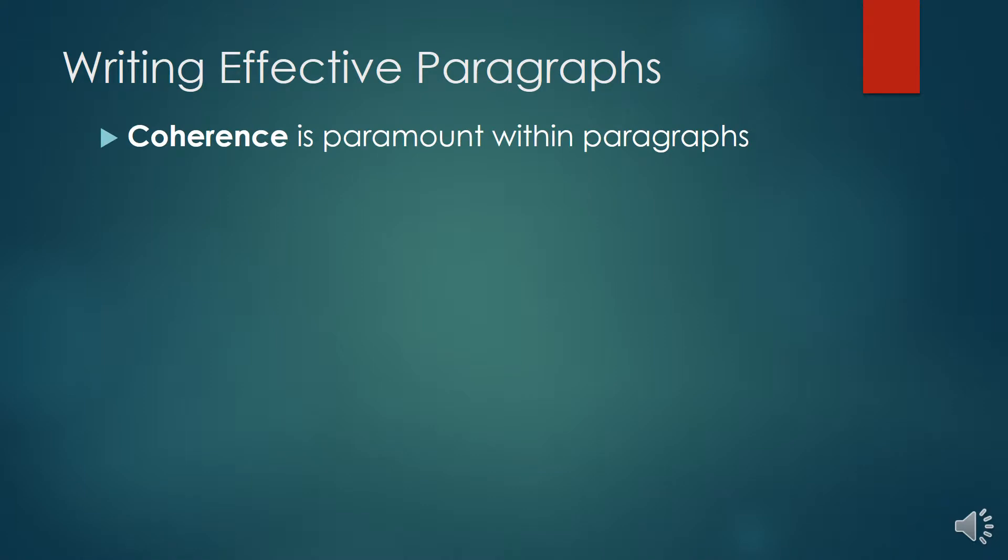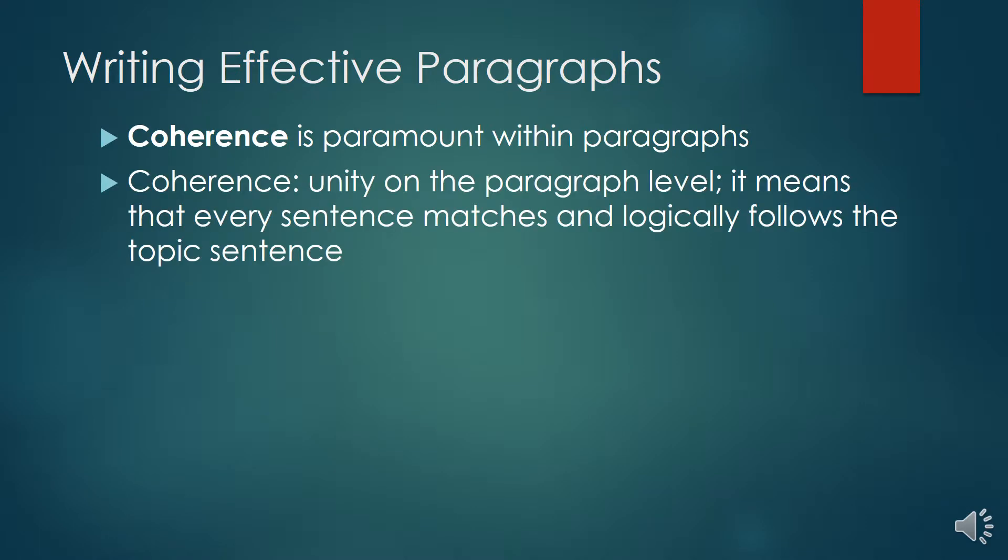The first thing is that coherence is paramount within paragraphs. So what is coherence? You might have heard before about the idea of unity in a paper. Unity is when all the paragraphs in the paper match up with and logically follow the thesis statement. Coherence is unity on the paragraph level, meaning that every sentence in that paragraph matches and logically follows the idea of the topic sentence.